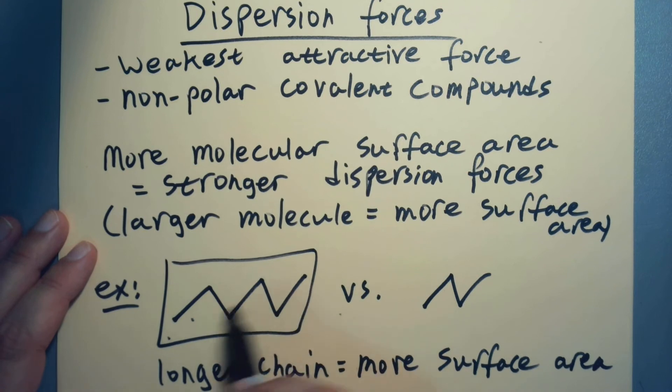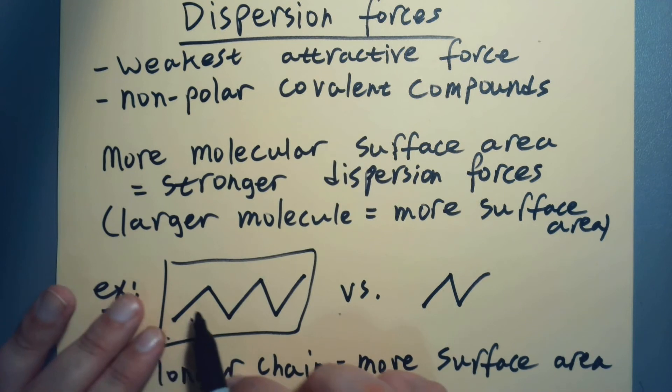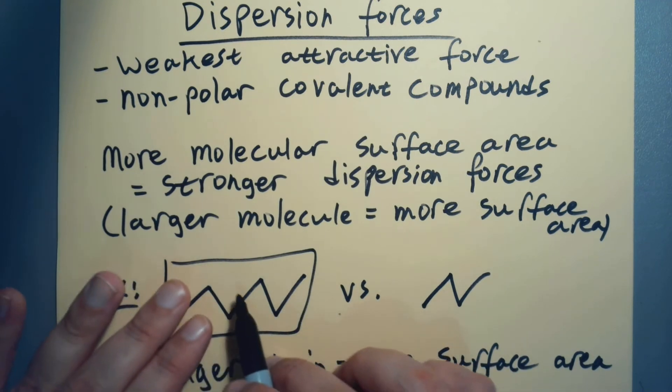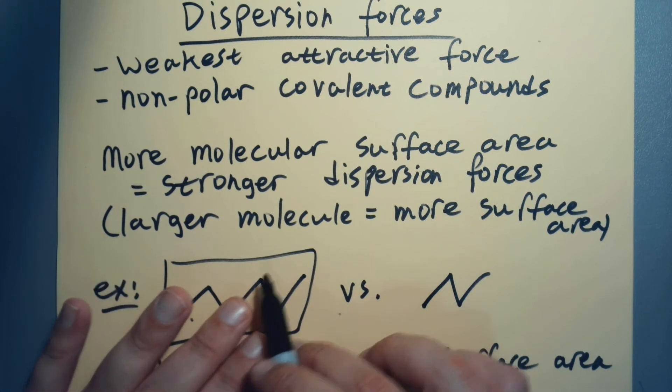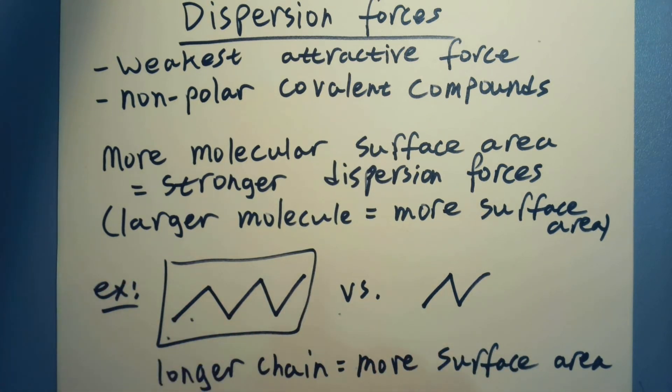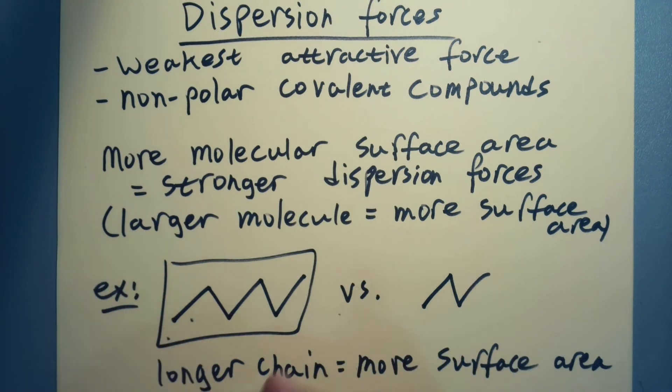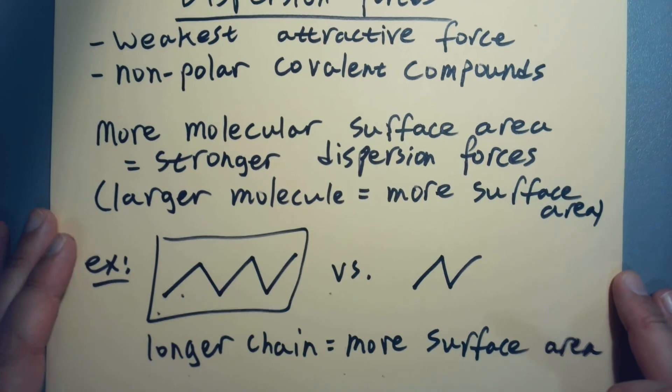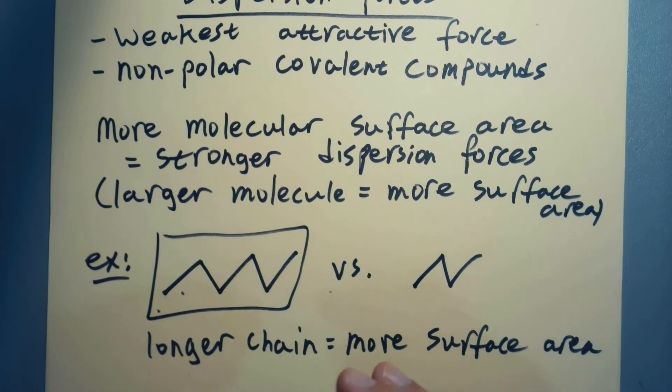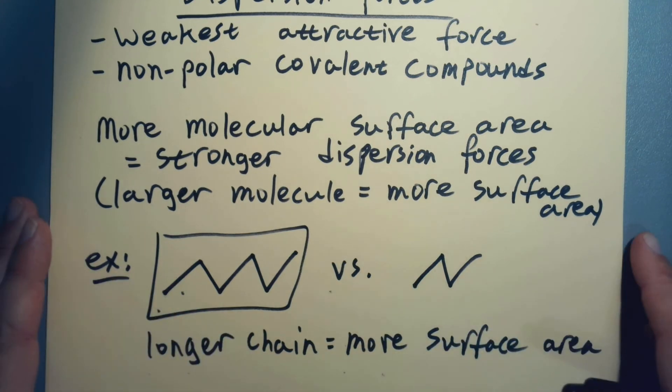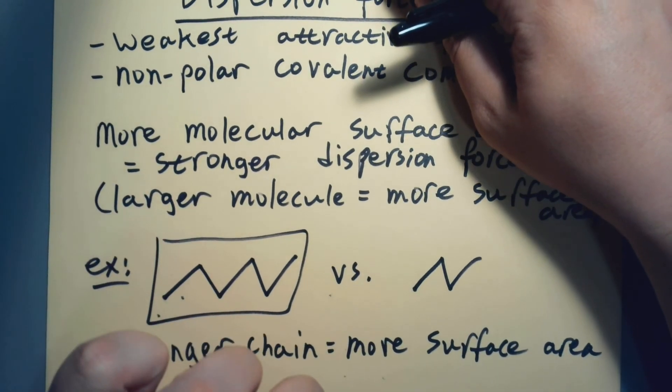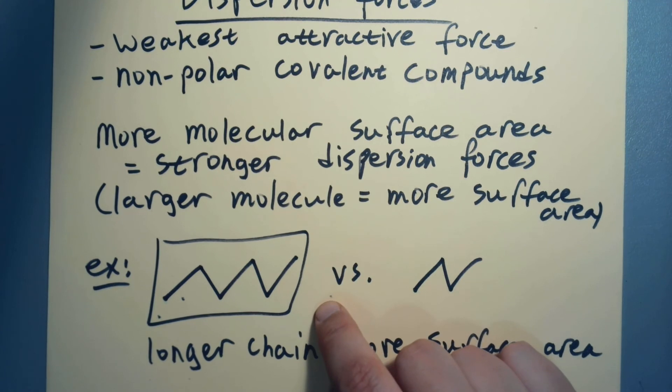So we have more surface area—there's more electrons running around on the deck of the ship. There's more likelihood that they're going to unevenly distribute somewhere. You're going to get that temporary positive here, maybe a temporary negative over here, and that's going to go away, and then maybe it shows up over here. But there's more places for it to happen, and so it's more likely to happen. If it's more likely to happen, then you're more likely to get those interactions, which means they're going to occur more strongly, even though they're still very weak overall. And it's still going to happen more often—more attraction.